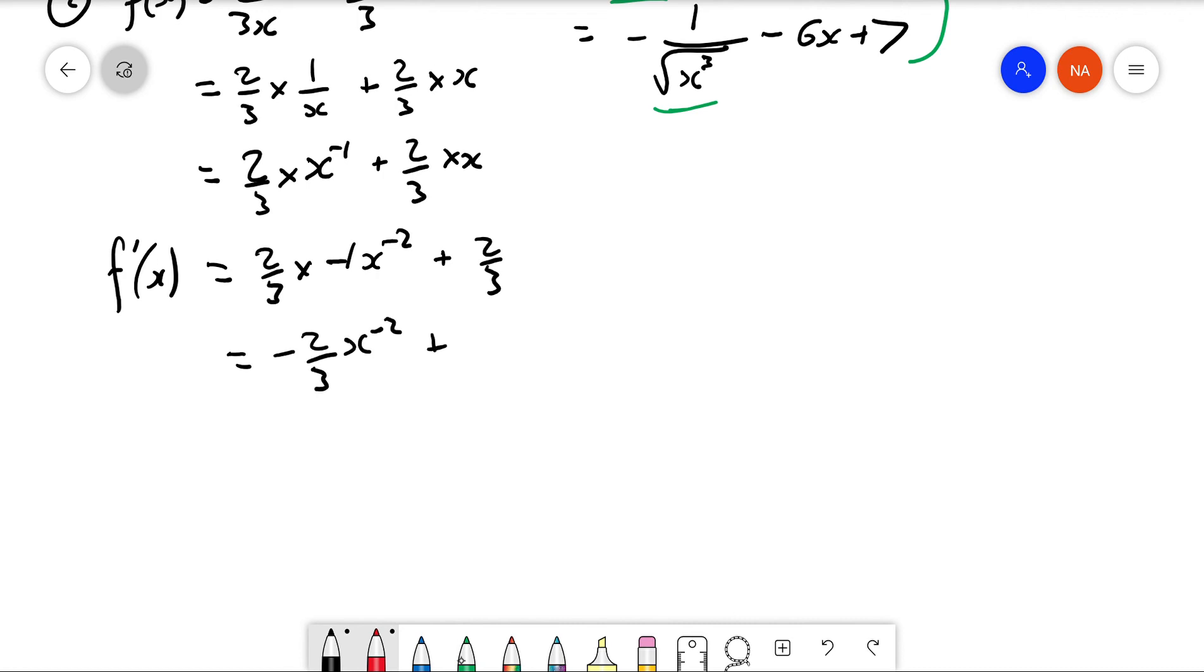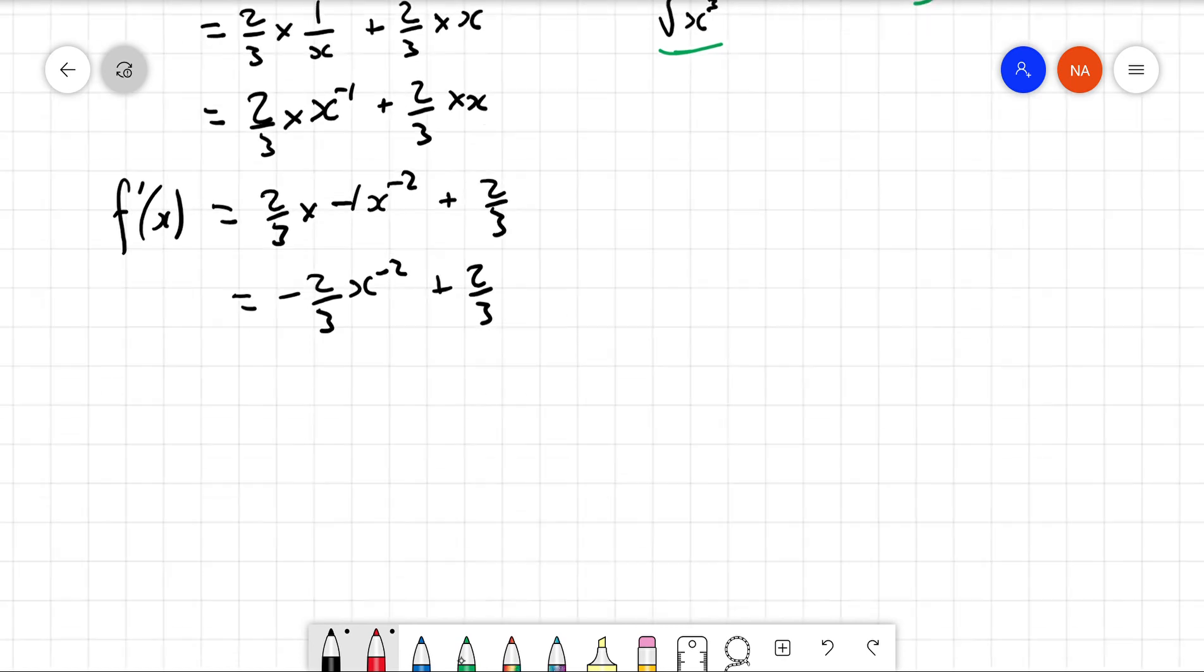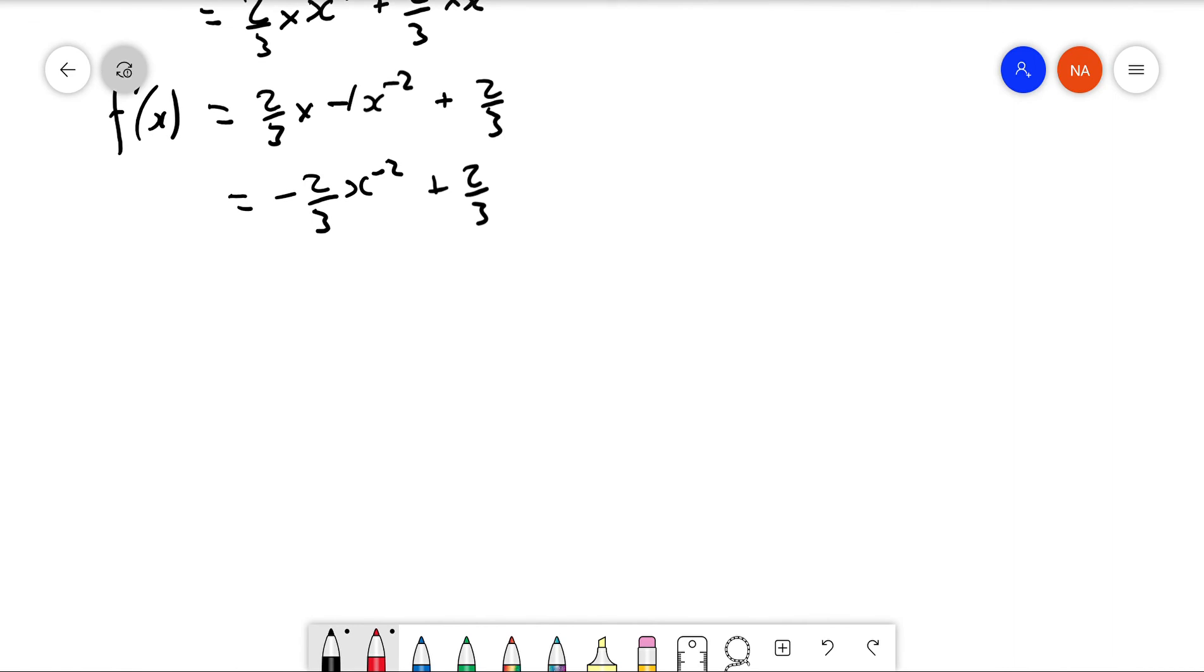That's it finished. I'm just going to make it look in different forms. You could stop there, that's correct. Or you could write it like this, and that's just another way of writing the same thing, just playing with the indices. Okay, that's the first two done. Now the third question - I forget what it was, let me just go back. Oh yes, here we go.